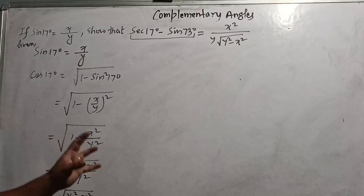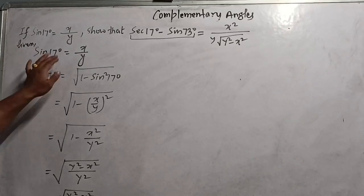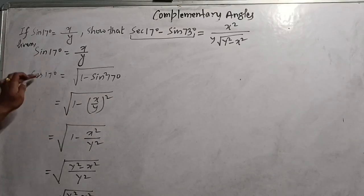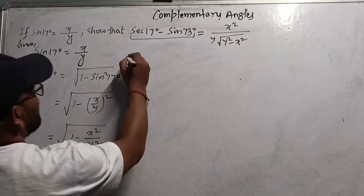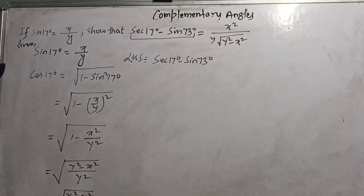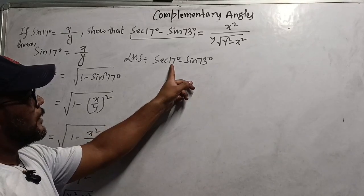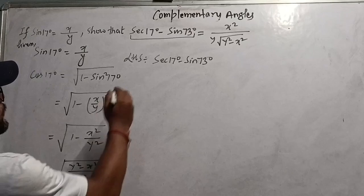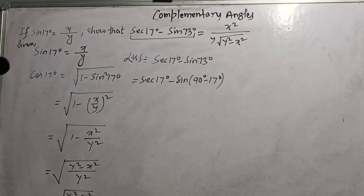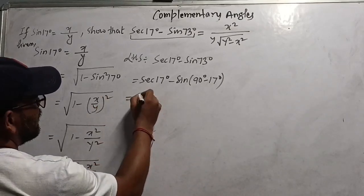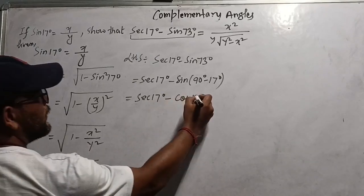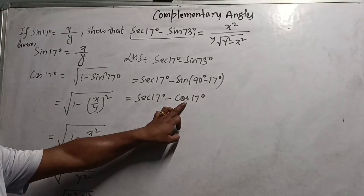Now to prove the expression: we have 17° and 73° = 90° - 17°. Change 73° to (90° - 17°). Using sin(90° - θ) = cos θ, sin73° becomes cos17° = √(y² - x²) / y. For sec17°, use the formula sec θ = 1/cos θ.